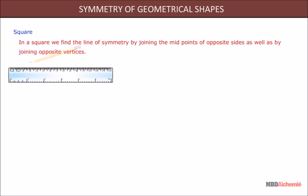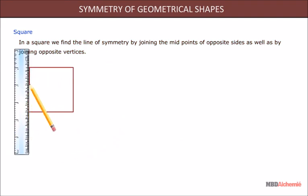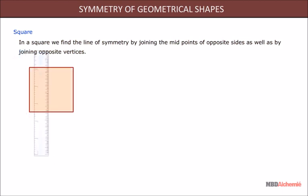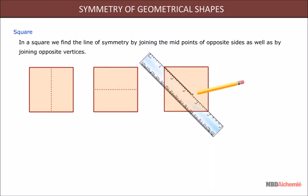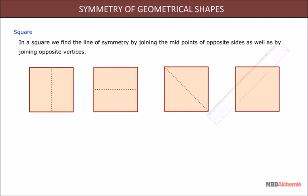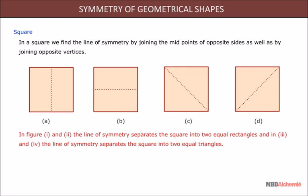In a square, we find the line of symmetry by joining the midpoints of opposite sides, as well as by joining opposite vertices. In figures one and two, the line of symmetry separates the square into two equal rectangles, and in figures three and four, the line of symmetry separates the square into two equal triangles.